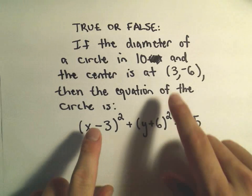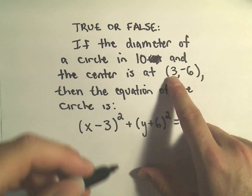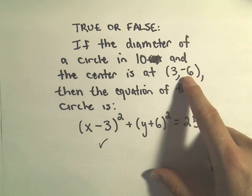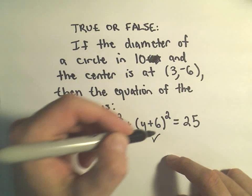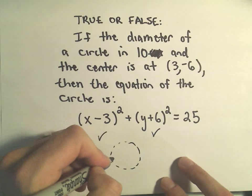So the first thing in here, since it's centered at positive 3, x minus 3, that's correct. Since it's centered at the y coordinate of negative 6, we do use positive 6, that's correct. Now they're telling us that the diameter of the circle is 10.